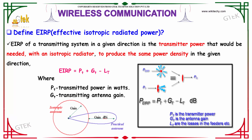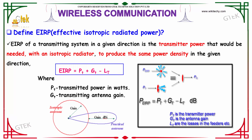We have the depiction of the formulation over here for EIRP. EIRP is PT plus GT minus LT.